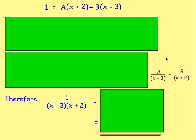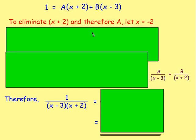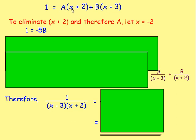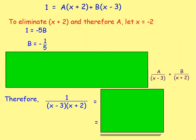To find A and B: let x = −2 to get 0A. Then −2 − 3 = −5, so 1 = −5B, giving B = −1/5. Then let x = 3 to eliminate B. We get 1 = 5A, so A = 1/5.